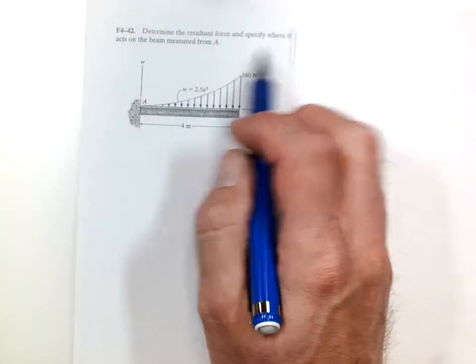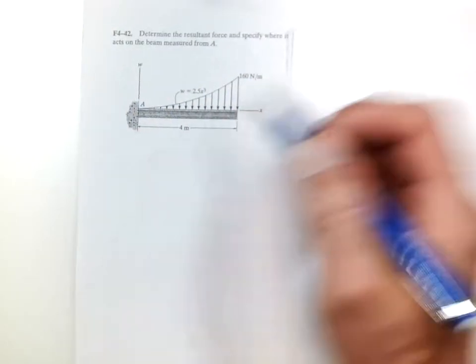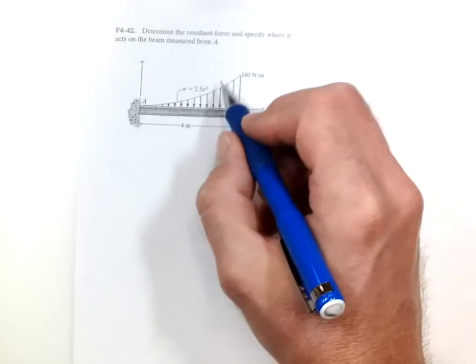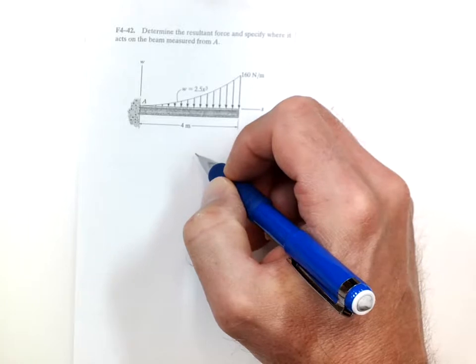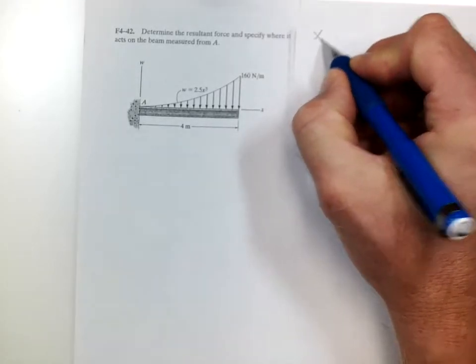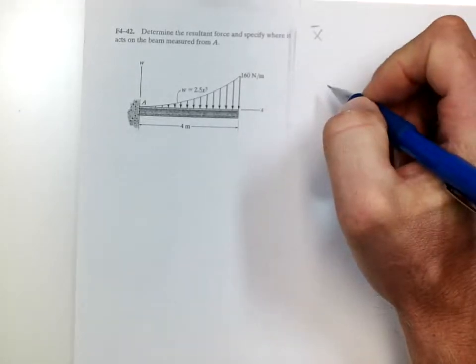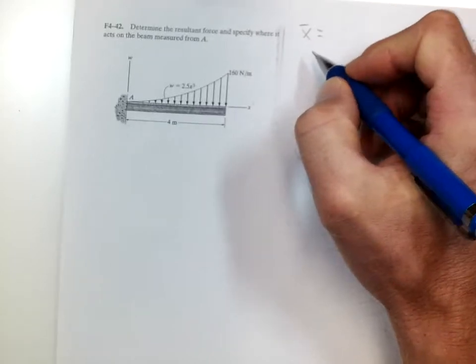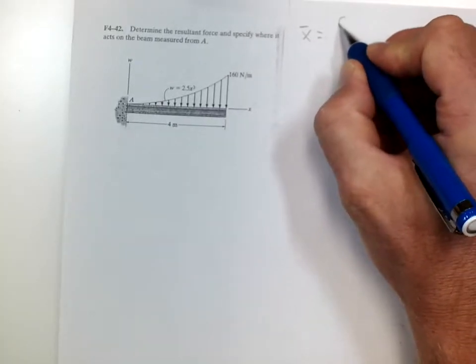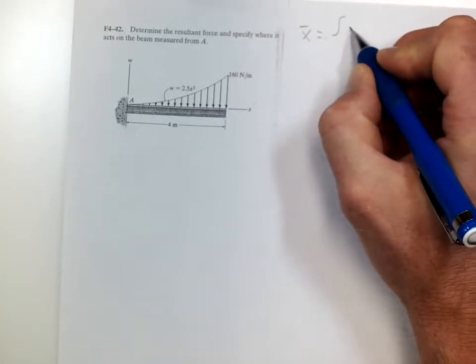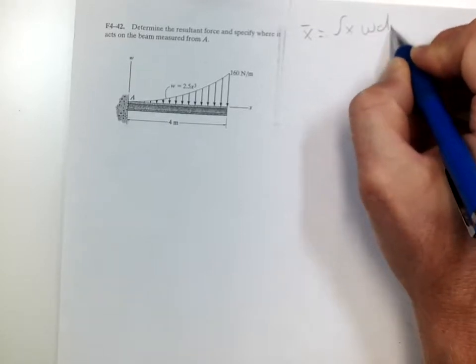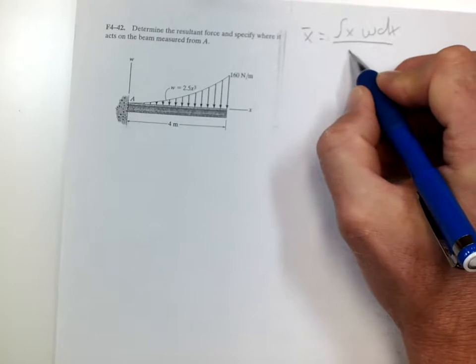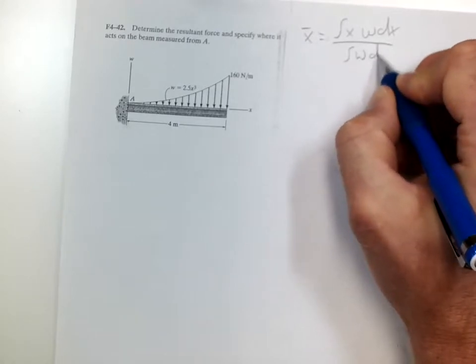Determine the resultant force and specify where it acts on the beam. So here we have a distributed load distributed according to this equation here. So the location of the distributed load, or the centroid, is the integral of x times w dx divided by the integral of w dx.